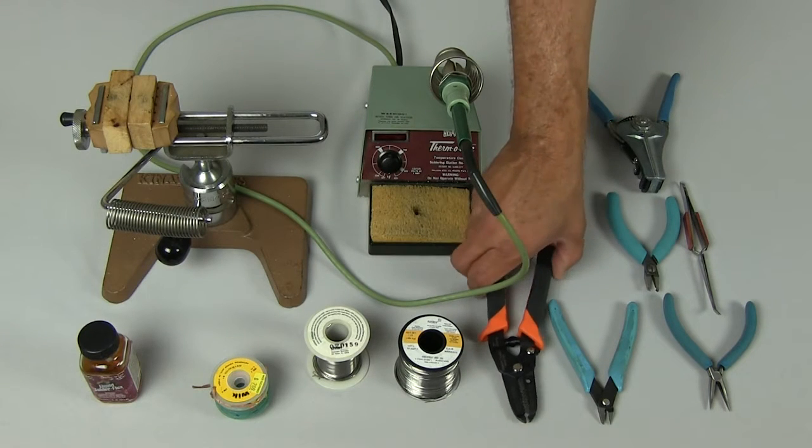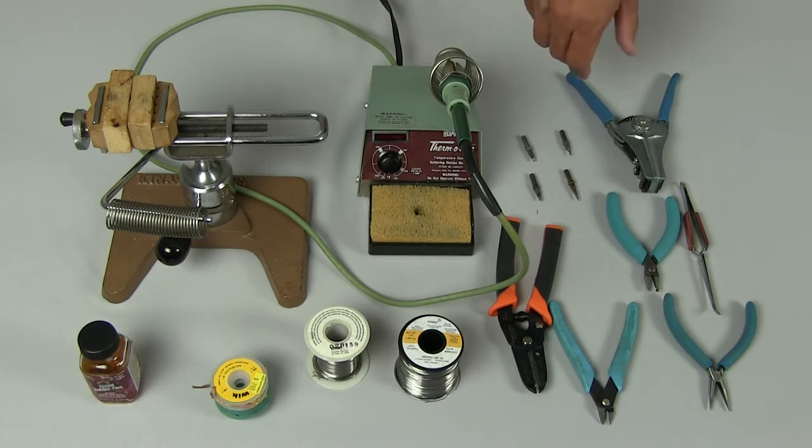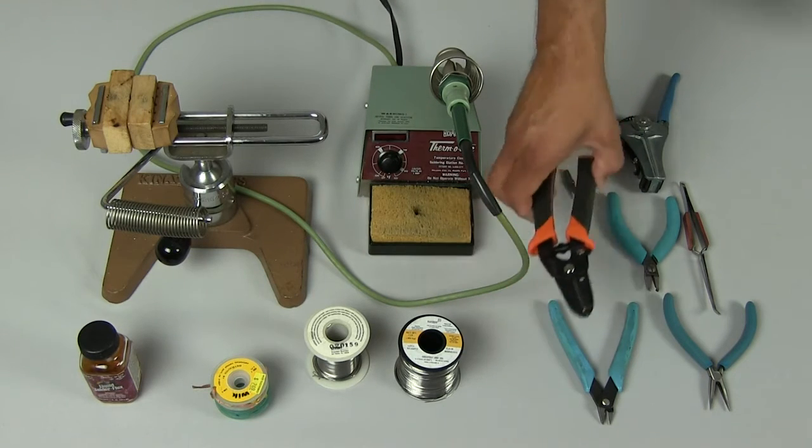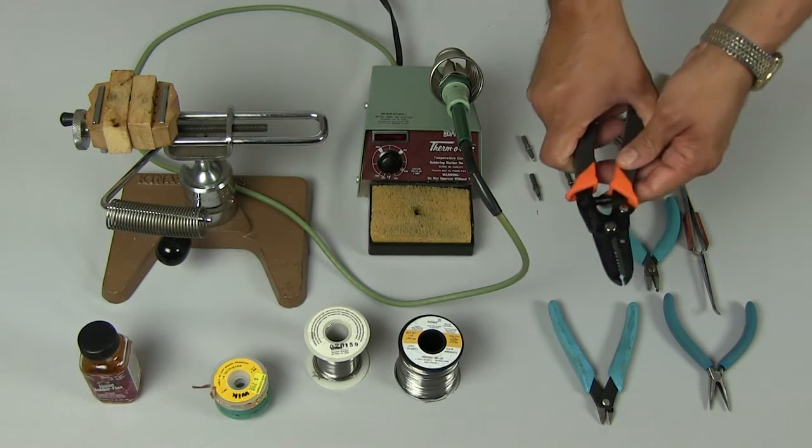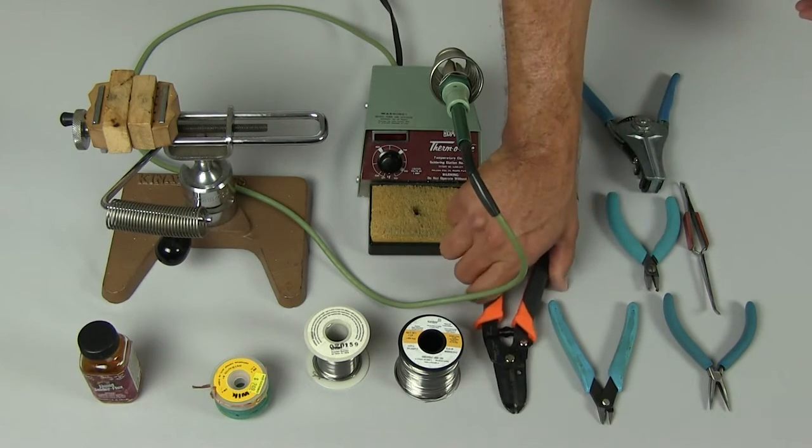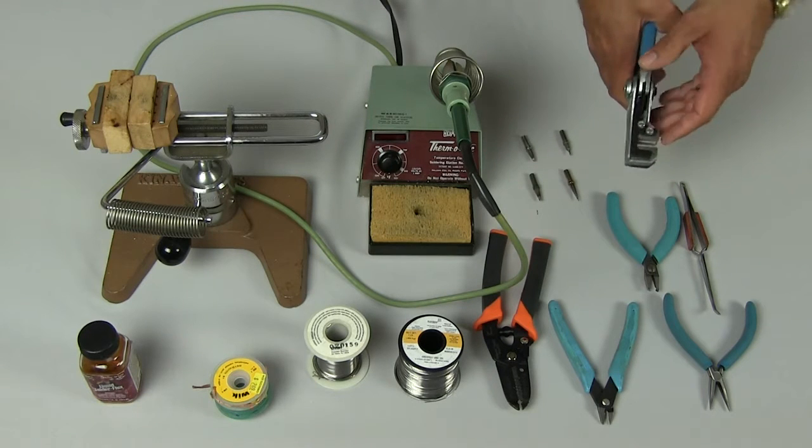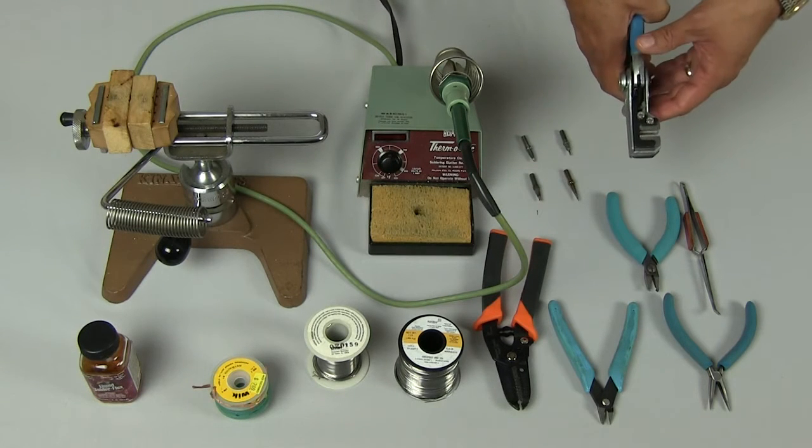Again, I use the solder wire size according to the size of the work that I'm soldering. Next we'll talk about wire strippers. Here I have two different types of wire strippers. One is a manual wire stripper gauged for 30 to 20 gauge wires. Then I have an automatic set of wire strippers gauged for 24 to 16 gauge wires.